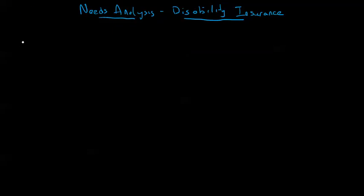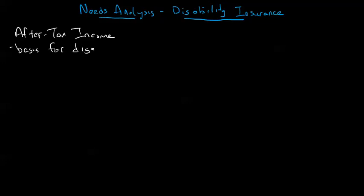The reason it's relatively straightforward is this: we're going to take your after-tax income. Whatever your after-tax income is, that's going to provide the basis for any disability insurance. Insurers will use an income ratio guide or an issue and participation limit based on that after-tax income. It can be a little bit complicated if it's going to be a taxable benefit, but that's essentially what we look at.